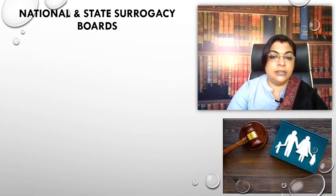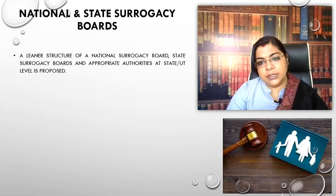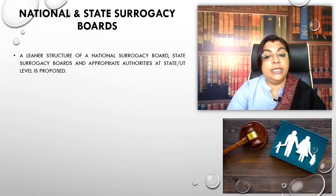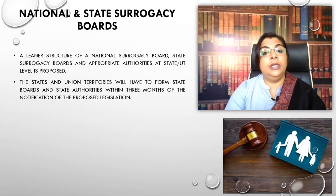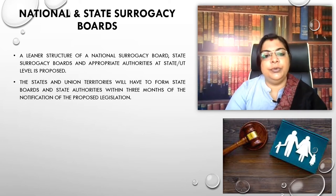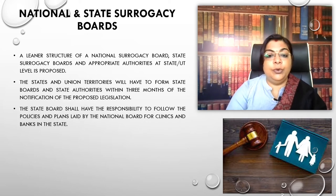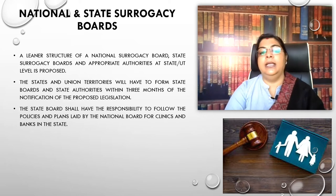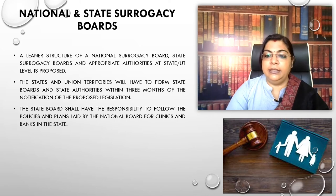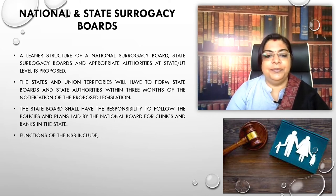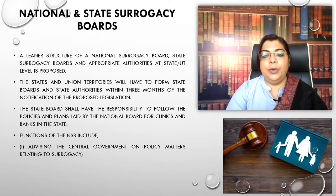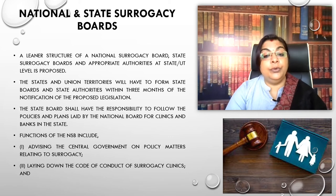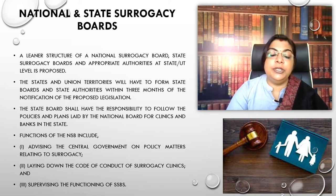The bill establishes National and State Surrogacy Boards along with an appropriate authority at the national, state, and union territory level. States and union territories must form a state board and state authority within three months of notification. The state board shall follow policies and plans laid by the national board for clinics and banks. The national board's functions include advising the central government on policy, laying down the code of conduct for surrogacy clinics, and supervising the state surrogacy boards.